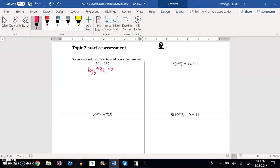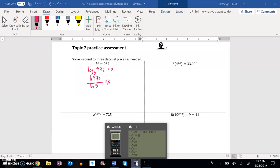Now what I'm going to do is rewrite this log statement using the change of base formula. So I could say natural log of 932 divided by natural log of 5 is x, and I'm going to do that on my calculator now.